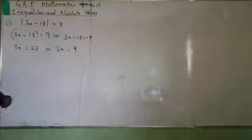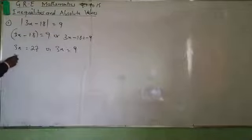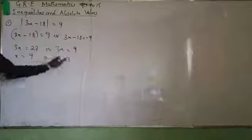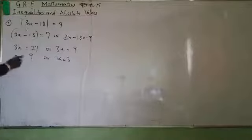Take note of that. My X will be equals to 9, or my X will be equals to 3. Those are the two possible values of X — either 3 or 9.